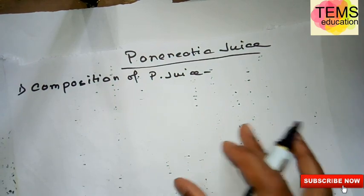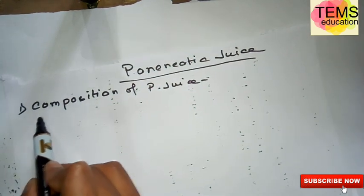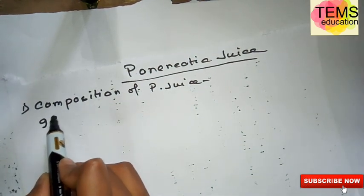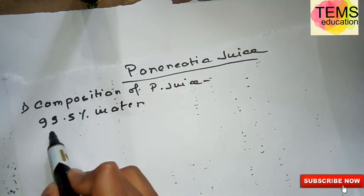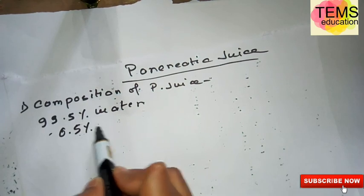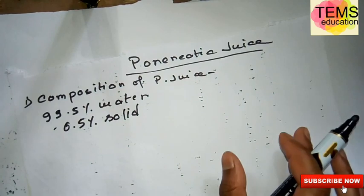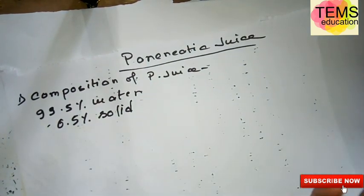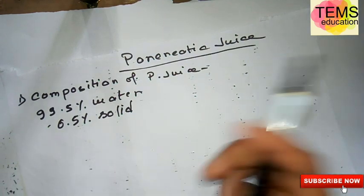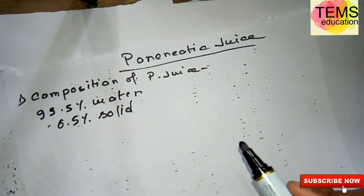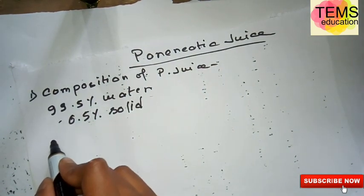The composition of pancreatic juice: pancreatic juice is composed of 99.5 percent water and 0.5 percent solid substances. The solid substances are organic and inorganic substances. First we will discuss about the organic substances of the pancreatic juice.